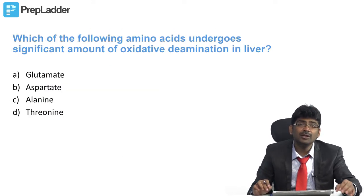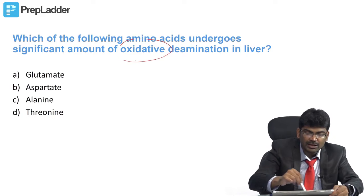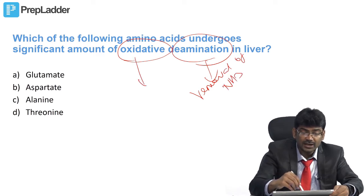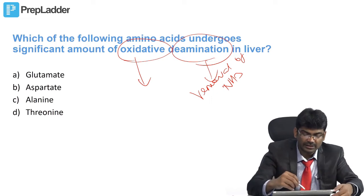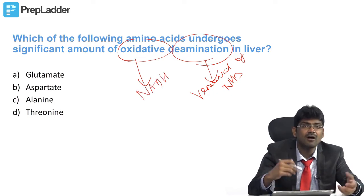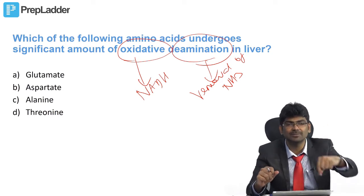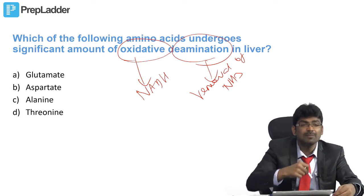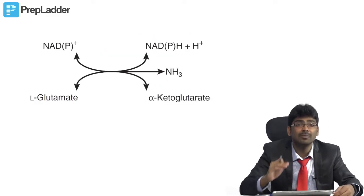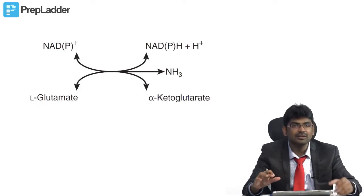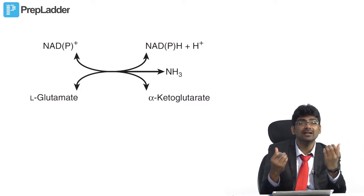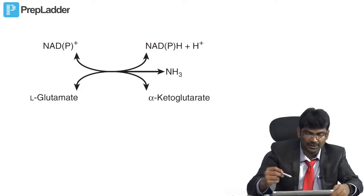Which of the following amino acids undergoes significant amount of oxidative deamination? Deamination is removal of ammonia. Oxidative means either NADH or NADPH will be produced — there is loss of electrons and NAD+ or NADP+ accepts those electrons. The answer is glutamate. That is why the amino group from all amino acids in the body is carried in the form of glutamate.